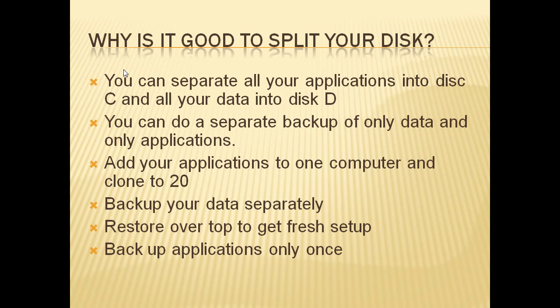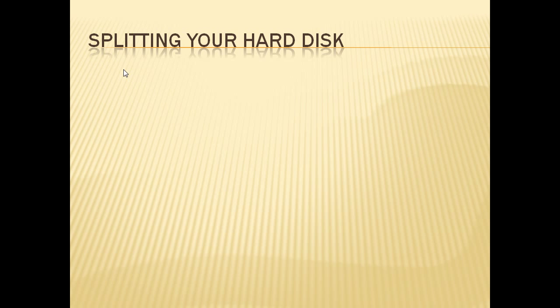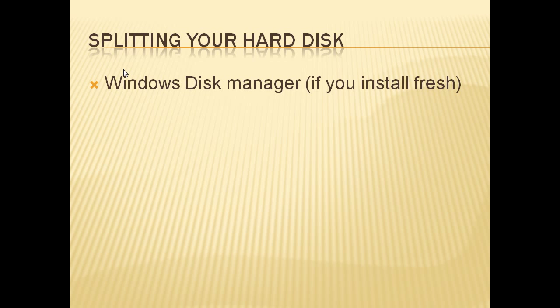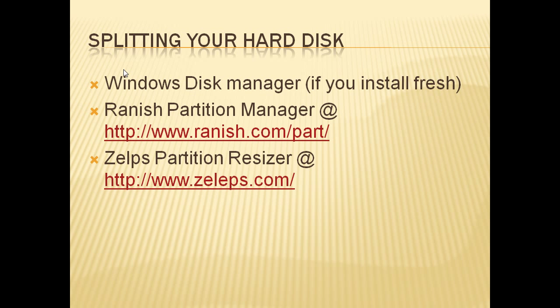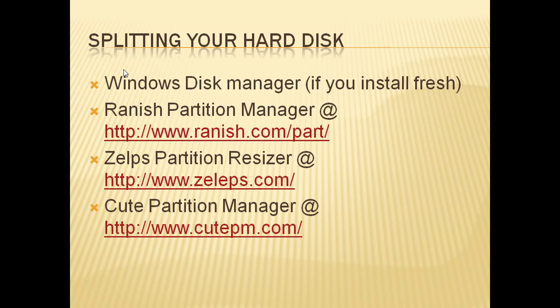Splitting your hard disk into two partitions is very easy — you can get software to do just that. It is best to split it before you set up Windows, so you can use the built-in partition manager that comes with Windows. If it was already set up and partitioned, you can use one of these three programs to resize an existing partition: number one, Ranish Partition Manager; number two, Zelps Partition Resizer; and number three, Qt Partition Manager. You will only need to do this once, so why pay money for a commercial partition manager?